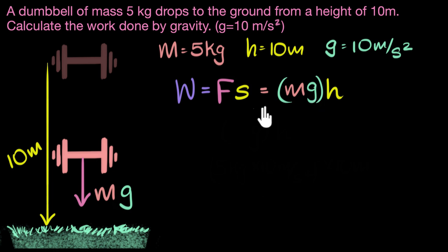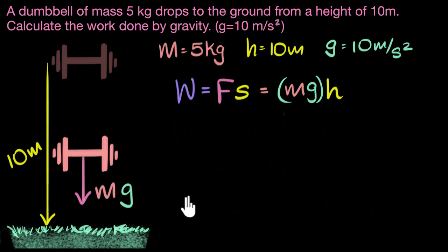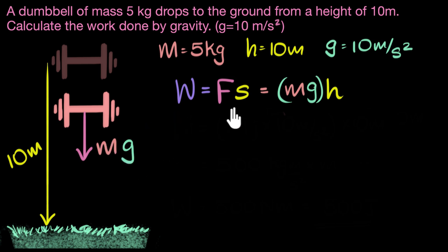In our example, notice the force is acting downwards and the displacement is also downwards, so the work done is going to be positive. If we had thrown the dumbbell up, the force of gravity would still act downwards but the displacement would be upwards — in the opposite direction — making the work done negative. But since the dumbbell is falling down, gravity is doing positive work.